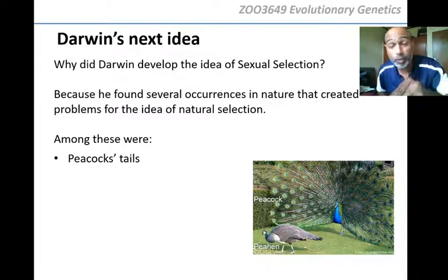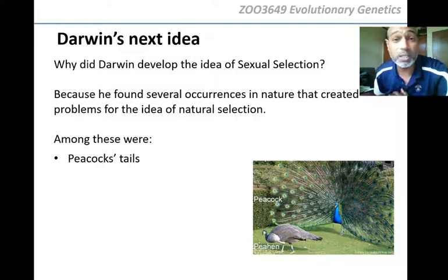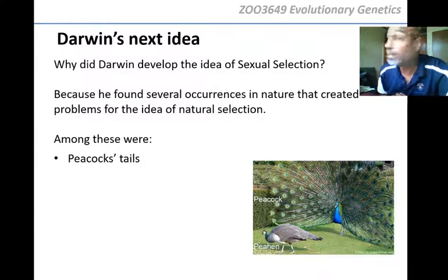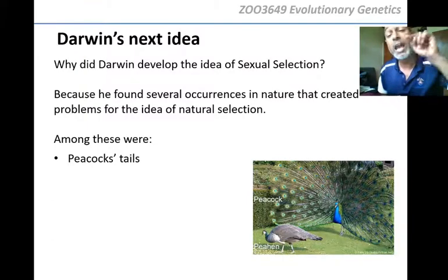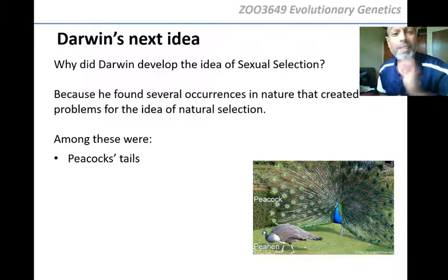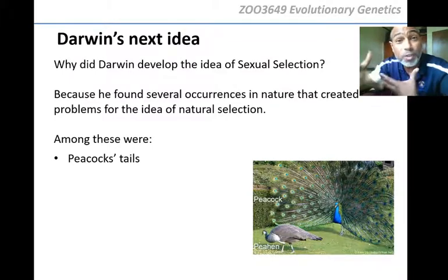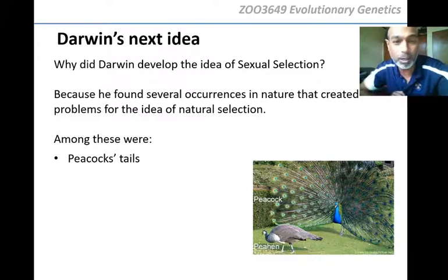How can your theory of natural selection answer this question? You said natural selection can answer why animals are most perfectly suited to the environment — but here are examples of animals that are not. That was the question Darwin received, and he was sitting for 12 years thinking about it, because people were clearly trying to find a flaw in his theory.